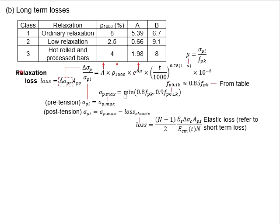Next, let us look at the losses due to steel relaxation. The equation to determine the losses is Δσpr times Aps. Aps here represents the area of the steel tendon, calculated from the formula: number of tendons times the area of each tendon.